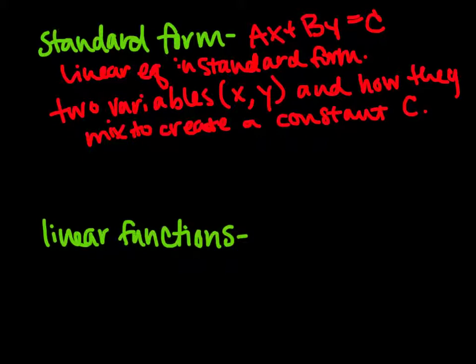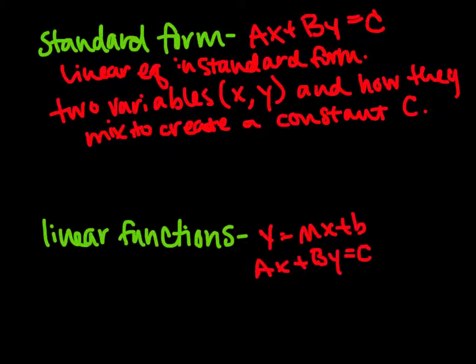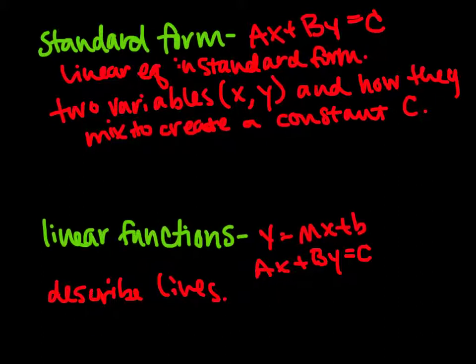Both of these equations, y equals mx plus b and Ax plus By equals C, are linear functions. They describe lines. There is an x value that we put in and we always get one y value out. The only time we don't is when we have just x equals something, but that's not y equals mx plus b. But they describe lines. Linear functions describe lines. So let's take this idea and run with it.